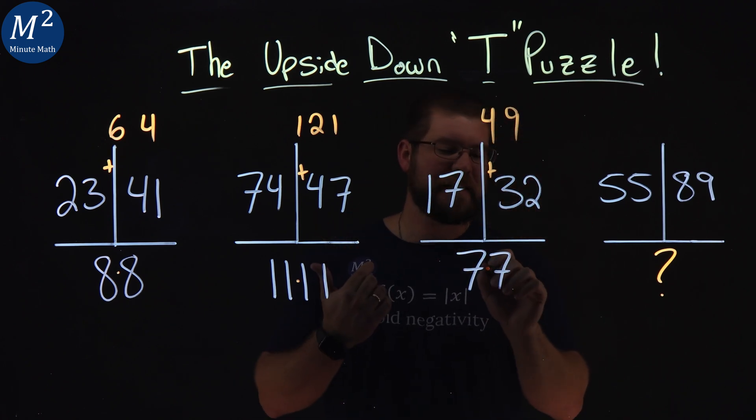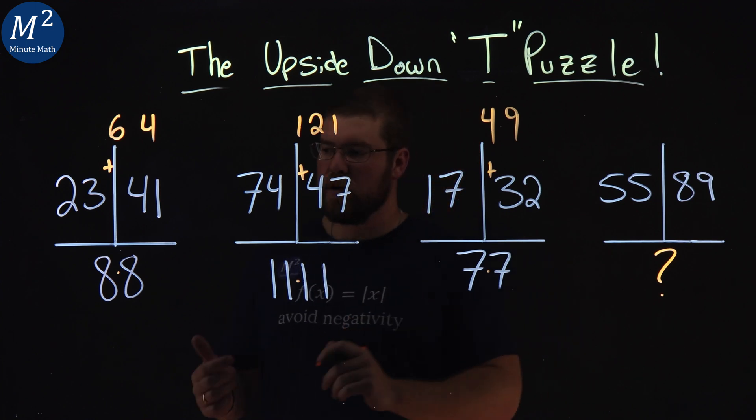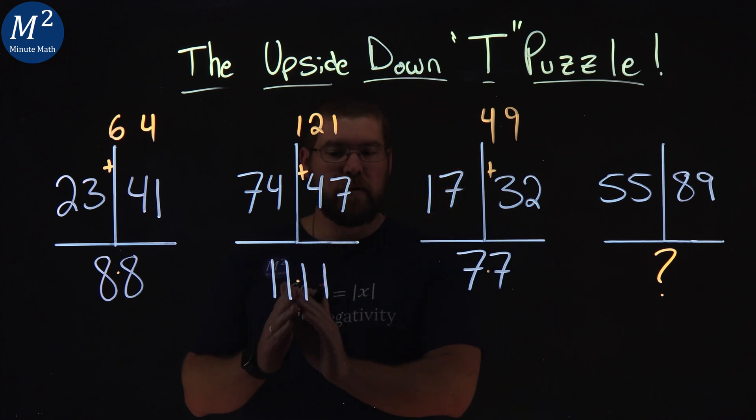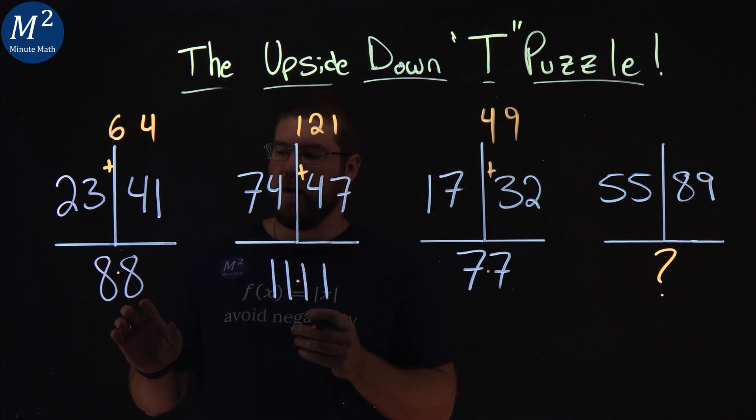49, that's 7 times 7. So clearly we have a pattern here of the two sets of numbers, right? Doesn't, right down the middle, doesn't actually have to be anything in there.